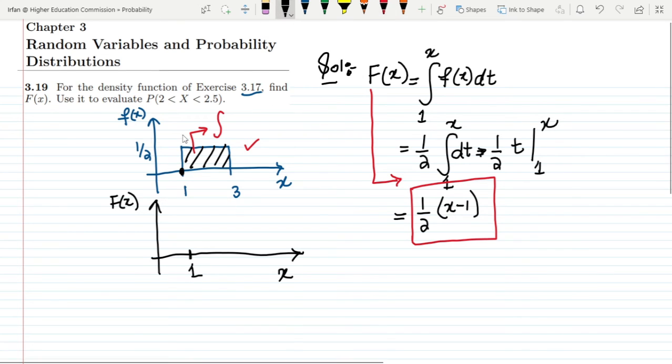Now by using the same formula I have to find out the value of the probability in which x is greater than 2 and less than 2.5. So I have to find out the probability that x is greater than 2 and less than 2.5.